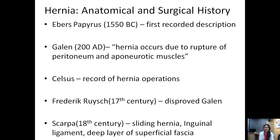Before delving into the anatomy, a brief outline on the anatomical and surgical history of inguinal hernia. The first recorded description dates back to 1500 BC by Ebers Papyrus. Galen in 200 AD hypothesized that hernia occurs due to rupture of the peritoneum and aponeurotic muscles, which was later disproved by Frederick Ruiz in the 17th century — it is not due to rupture of the peritoneum but through a defect or weakness in the abdominal wall. Celsus maintained a record of hernia operations. Scarpa in the 18th century was the first to describe a sliding hernia — where a wall of the sac is formed by the peritoneum covering a retroperitoneal organ such as the bladder or colon — and described the inguinal ligament. Scarpa's fascia has been named after him.